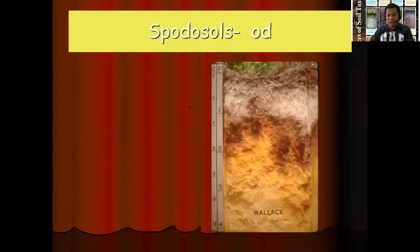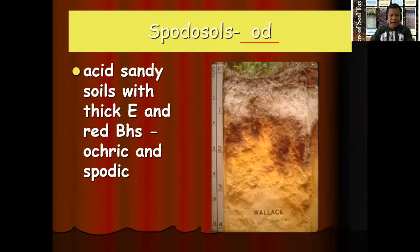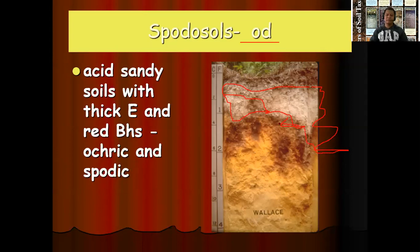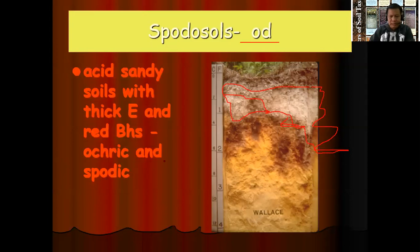Spodosols have the formative element OD. Spodosols are acid sandy soils with a thick E horizon and a reddish B horizon. The E horizon is the white portion visible in the profile — the zone of removal — where components have been removed from that portion and drained down into the lower horizon, which is why it becomes white.